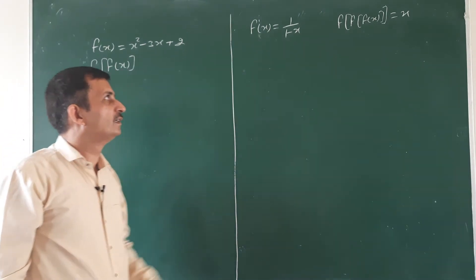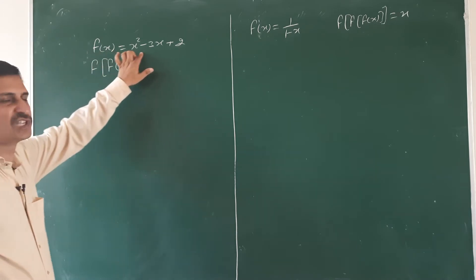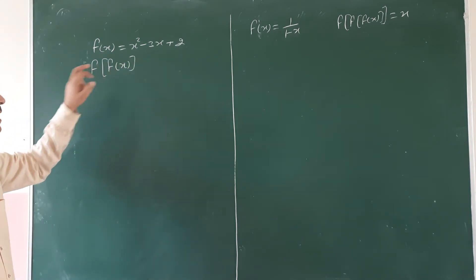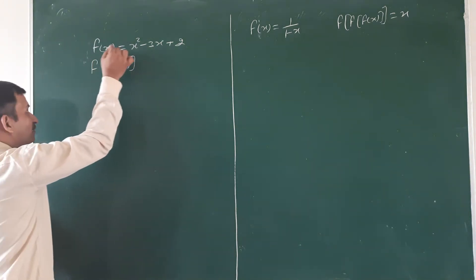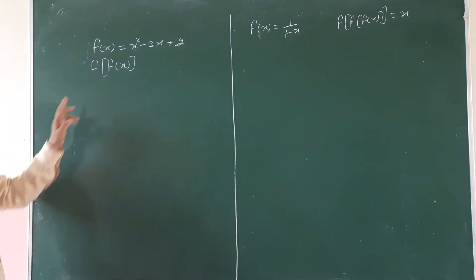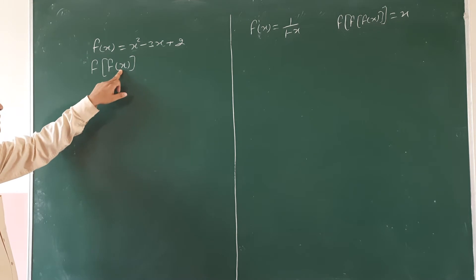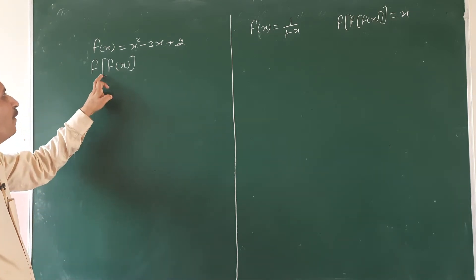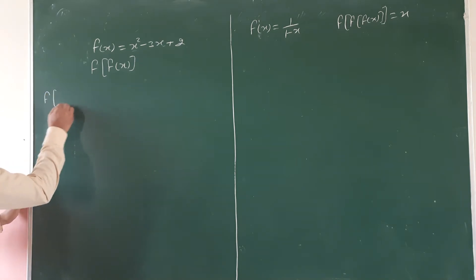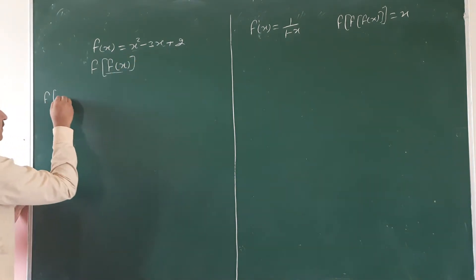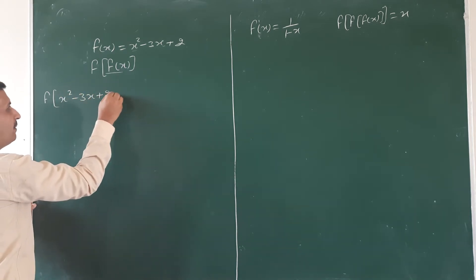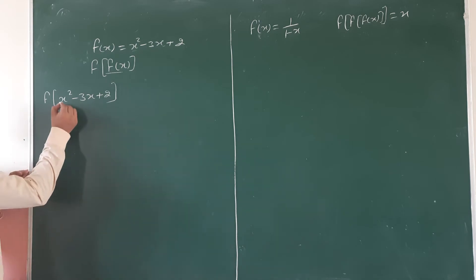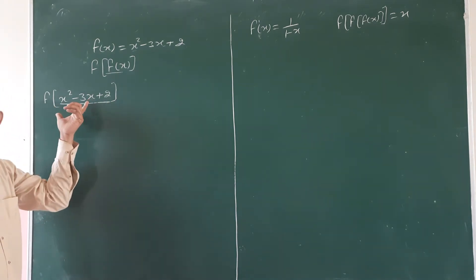Now let me start another question — most important question. If f(x) = x²-3x+2, find f(f(x)). यदि हमारे पास function of 2 निकालना होता, तो जहाँ पर भी x होता, वहाँ 2 लिखते। अब यहाँ पर f(f(x)) निकालना है। Function of x = x²-3x+2। अब जहाँ पर भी x होगा, वहाँ पर हम यह value put करेंगे।